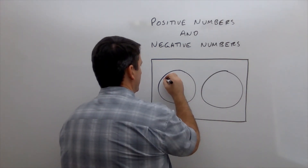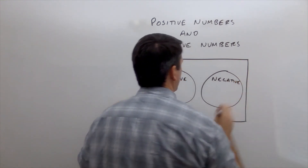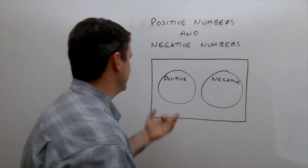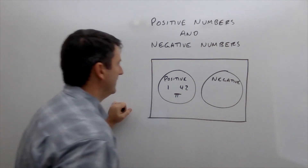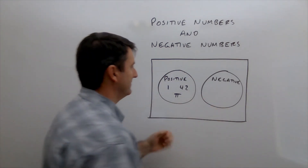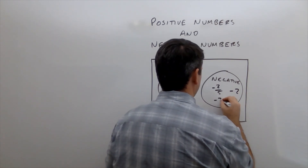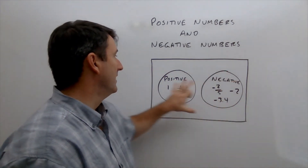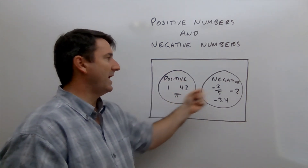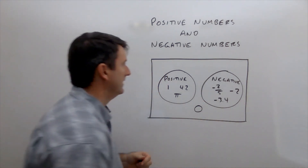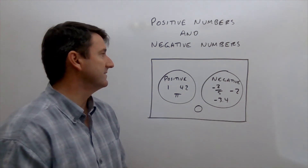We label one circle positive and the other negative. A positive number might be 1, 42, or pi — any positive number goes in that circle. Negative numbers like negative two-fifths, negative two, or negative 3.4 go in the other circle, with no overlap between them. Outside both circles, in the third region, are numbers that are neither positive nor negative. In this case, there's only one: zero.